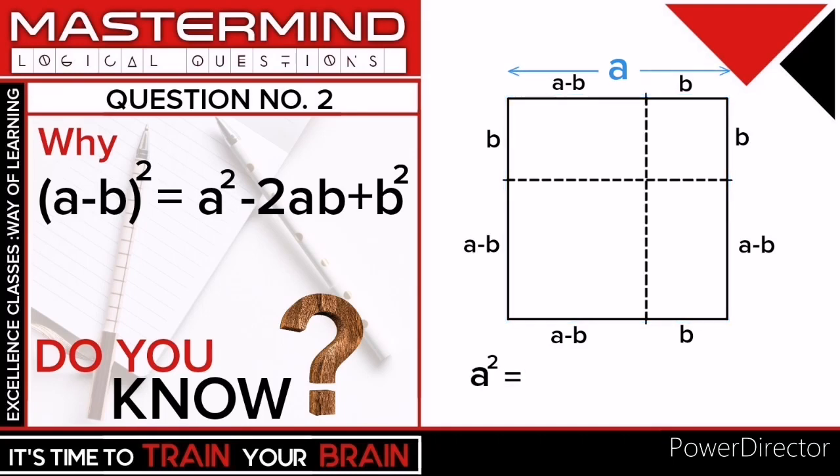And it is equals to the area of this square, that is (a-b)², plus the area of this rectangle, that is ab, plus the area of this rectangle, that is also ab.